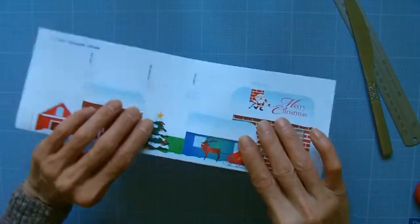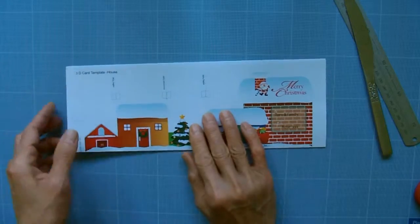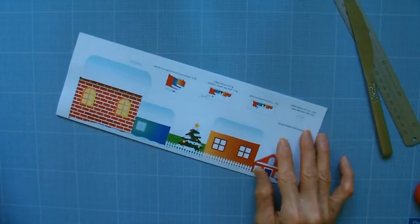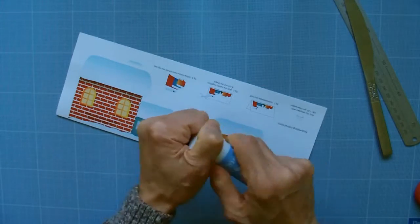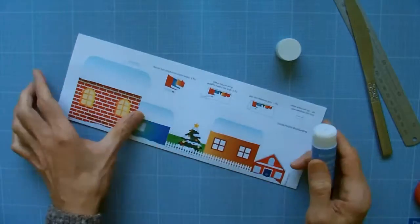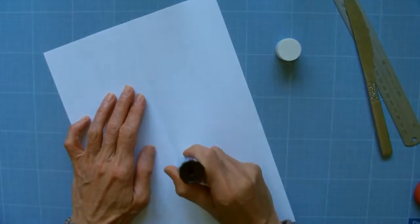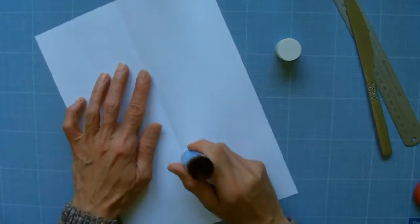Now fold the template into half. Apply glue on the reverse side of the template and stick the two halves together.